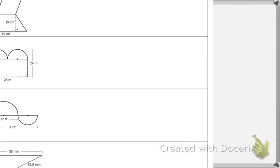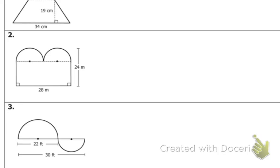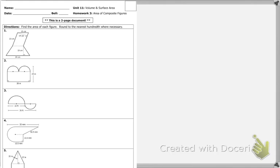Let's look at number 2. What is the area of this composite figure? So what do I see here? I have a rectangle, and I have two half circles, which will be one full circle.